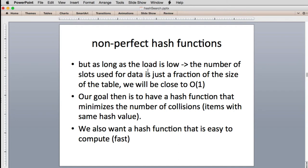So as long as the load is low, meaning that you have a lot of the table that's unused, the number of slots you use for the data is just a fraction of the size of the table, we're going to be very close to 0 of 1. And at the back of this section, we'll actually talk about analysis. So our goal is to have a hash function that minimizes the number of collisions. So that's what we really want to have. So the collisions are items with the same hash value. And we also want one that's really fast to compute. We want to keep that constant time. So we just want a fixed number of operations to actually calculate the hash function.